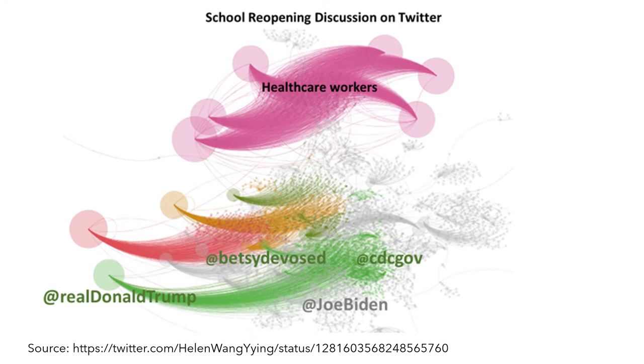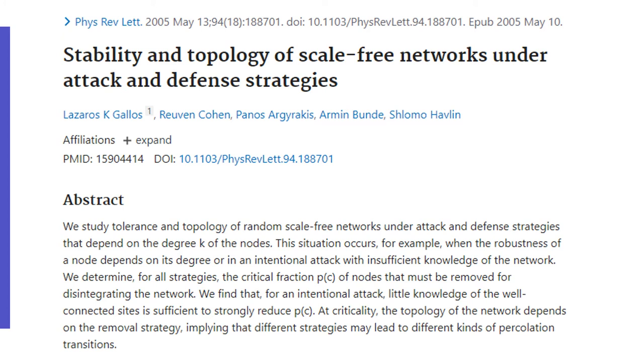Are scale-free networks robust to attacks? It depends. If we randomly remove a node from the network, since most of the nodes are not hubs, the node removal does not have much influence on the network. Hundreds of routers routinely malfunction on the Internet at any given moment, but we rarely notice the disruption.